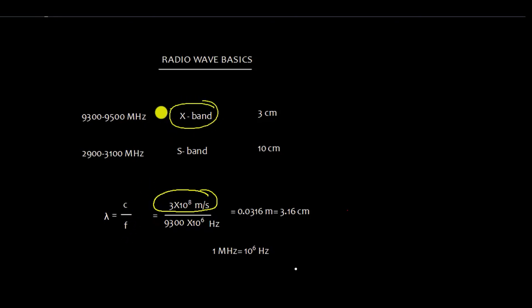For X-band, the frequency band is 9,300 to 9,500 megahertz and mega means 10 raised to the power 6 hertz. If we calculate, it comes to 3.16 centimeter and hence, we call it as 3 centimeter radar for this wavelength.